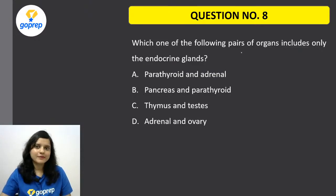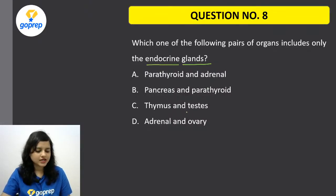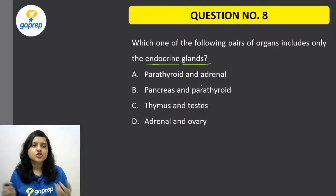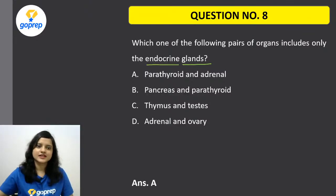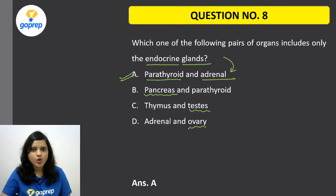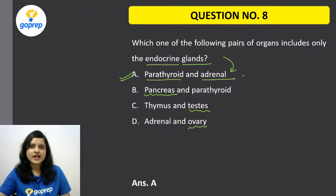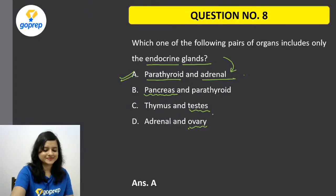Question number 8: Which one of the following pairs of organs includes only endocrine glands? Among options A, B, C, and D, mark only the endocrine glands. Remember, heterocrine glands — which are a combination of endocrine and exocrine — you have to rule out. Option A is correct: parathyroid and adrenal gland are only endocrine glands. Here pancreas is heterocrine, testis is heterocrine, and ovary is heterocrine. Only this option has purely endocrine glands.